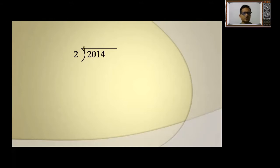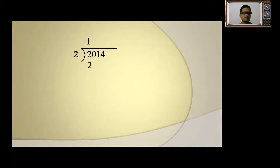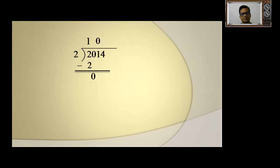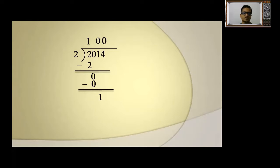Starting the division: 2 divided by 2 gives 1, subtract to get zero. Bring down the next single digit — which is 0. Since 0 is smaller than 2, we write 0 in the quotient and bring down the next digit. Bring down 1; since 1 is also smaller than 2, we write 0 in the quotient again. Remember, only bring down a single digit at a time.